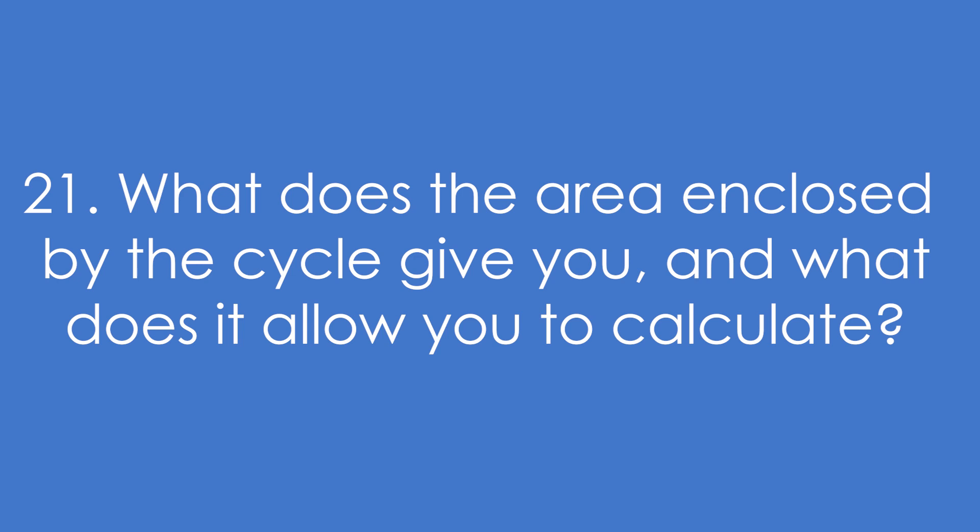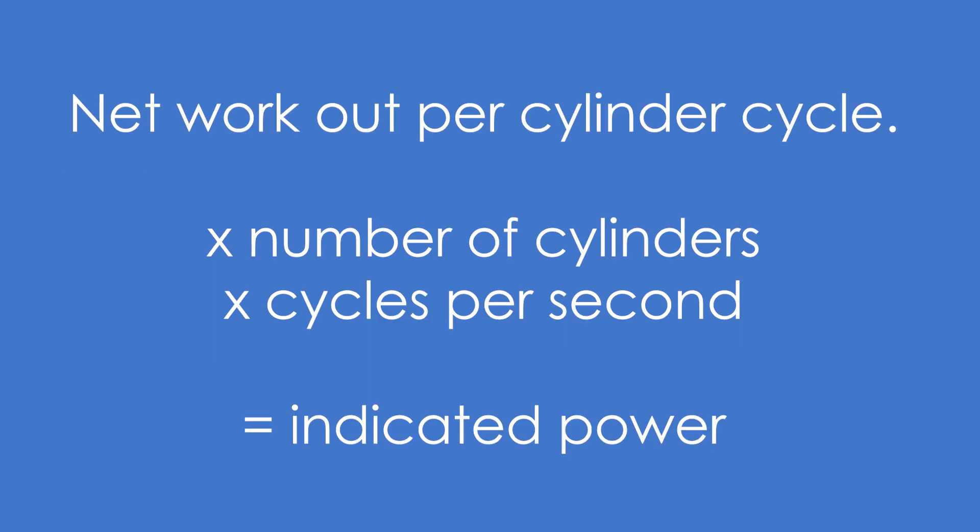Question 21: What does the area enclosed by a cycle give you, and what does it allow you to calculate? It gives you net work out per cylinder cycle. Multiplied by the number of cylinders and the number of cycles per second, that gives the indicated power of the engine.